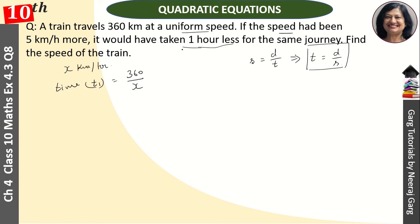Now, if the speed had been 5 km more, how much speed will be? x plus 5 km per hour. This is our speed. So, time is equal to t2. This will be 360 upon x plus 5.